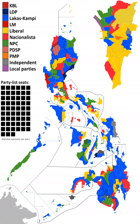Pangasinan 2nd: Liberal incumbent Victor Agbayani is running for Governor of Pangasinan. The Liberals are fielding Arthur Karanangan as their nominee for the seat. Seven candidates are running for the open seat. Former CIBAC Party List Representative Kim Bernardo Loken of the NPC will face former Philippine National Police Director and Colonel Leopoldo Bataoil of Lakas-Kampi CMD. Bataoil, despite having a 36,000-vote lead against Loken, only got 39% of the vote.